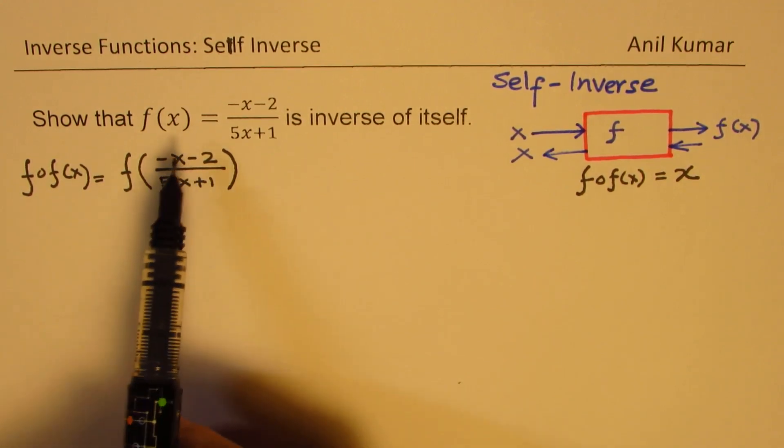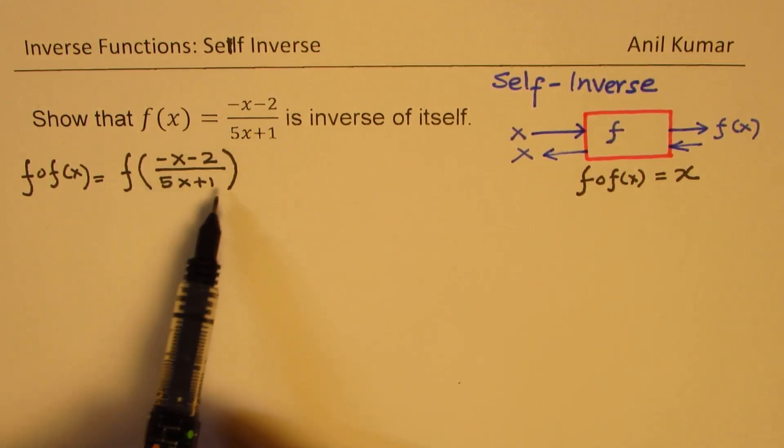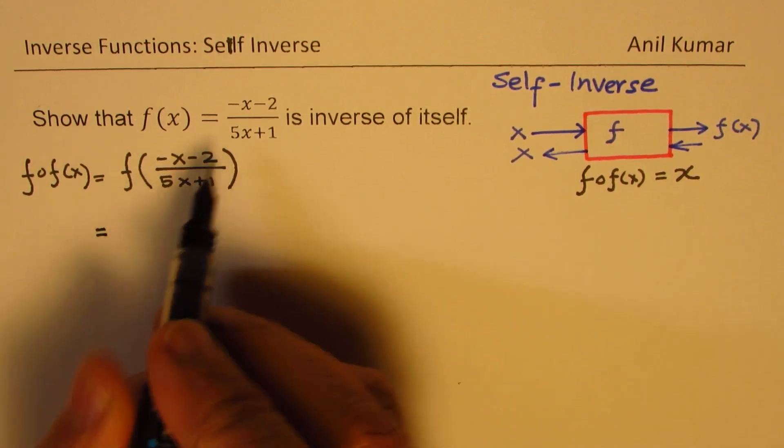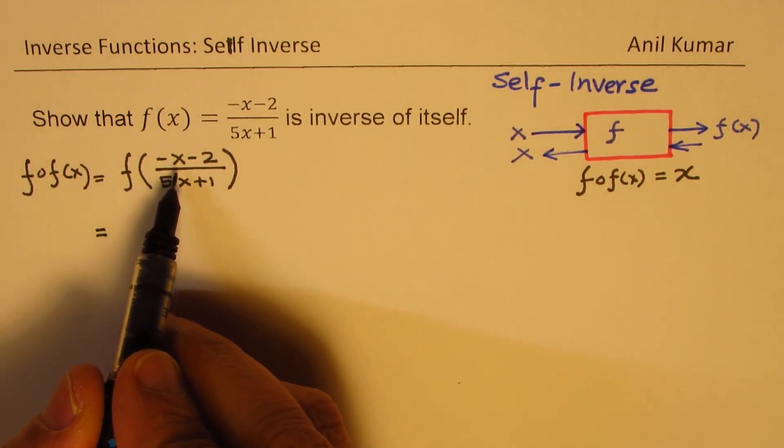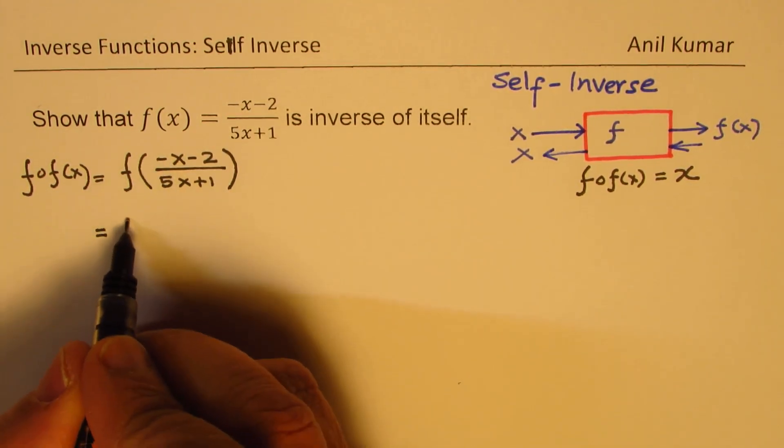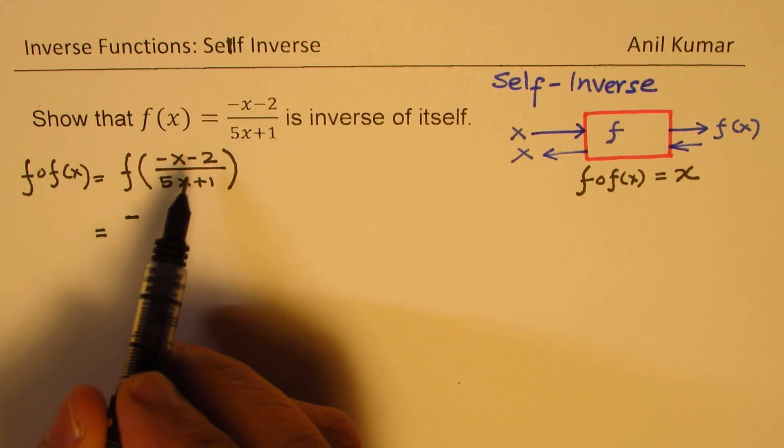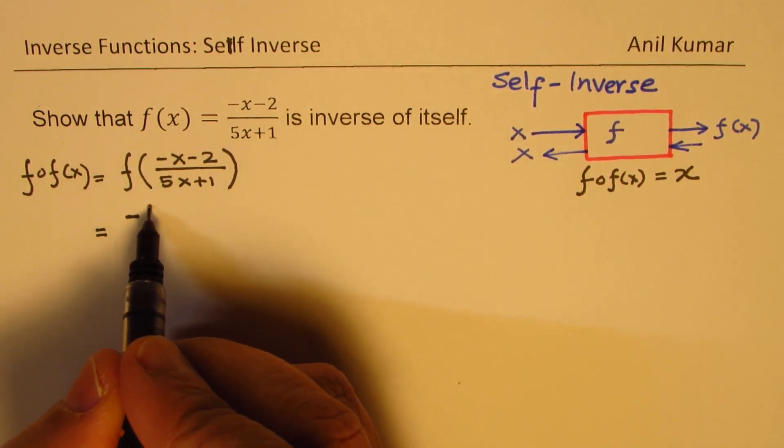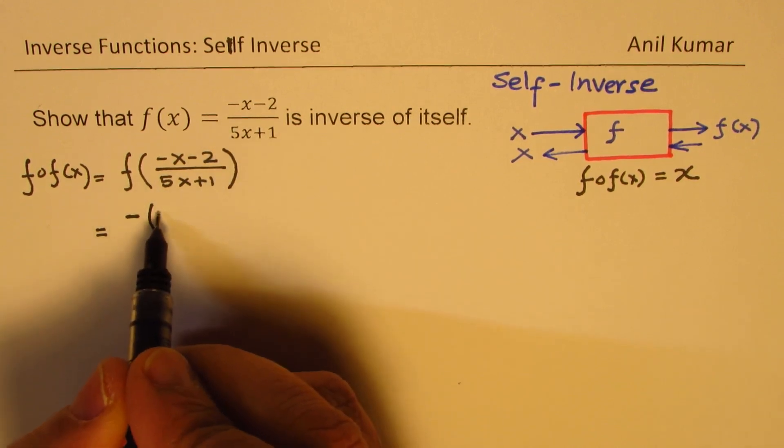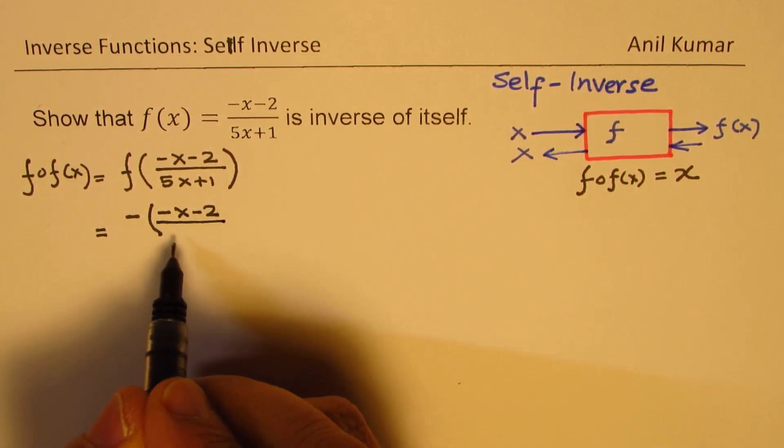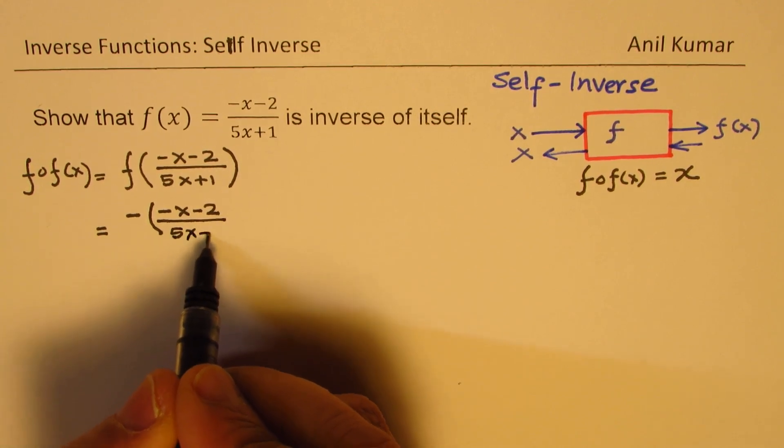Now, f of this means in the function, we'll replace x with all this value. So what we get here is minus x will now be replaced by minus x minus 2 all this. So we are replacing this with minus is already there. And what we are writing here is, let me put it in the brackets, minus x minus 2 over 5x plus 1.